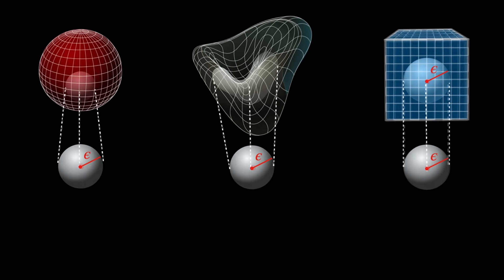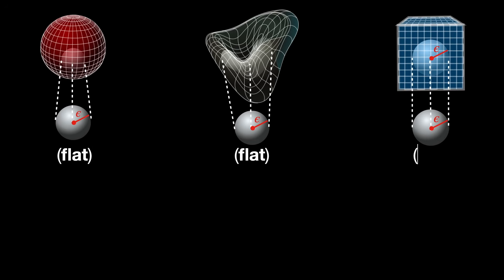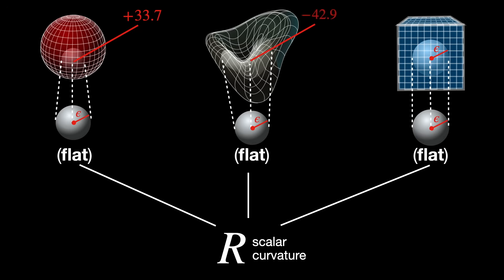The scalar curvature tracks how much this volume differs from what it would be in a flat space, for each point. The result is a single number at each point. If it is positive, the ball shrinks. If it is negative, the ball expands.